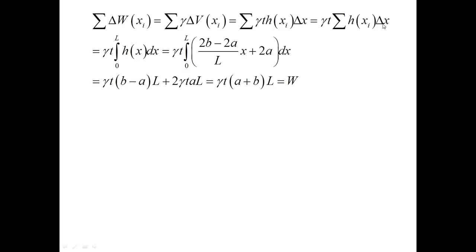It's a Riemann sum. This Riemann sum could be converted to the integral. Gamma T is constant outside of the integral, and instead of the sum, we simply write the integral from 0 to L H of X dx. Since H of X is a linear function, the integration is very simple, and it leads to the answer that the sum of the elementary forces is gamma T times A plus B times L.